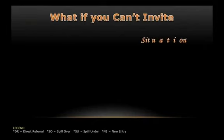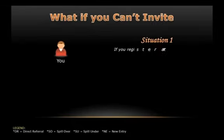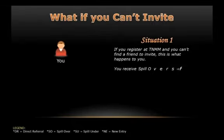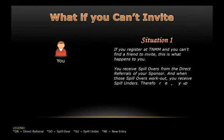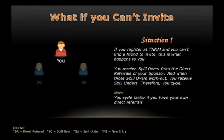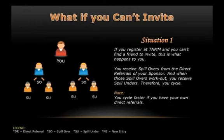But what if you can't invite friends to join? Let me open up two situations. Situation one: if you register at TNMM and you can't find a friend to invite, this is what happens. You receive spillovers from the direct referrals of your sponsor. And when those spillovers work out, you receive spill unders. Therefore, you cycle — and note, you cycle faster.